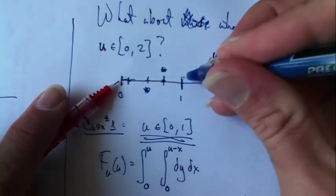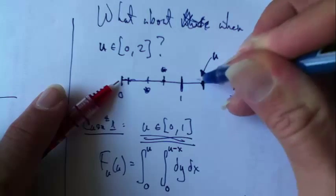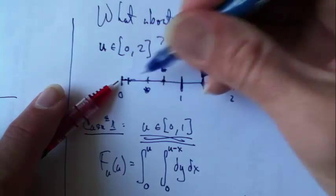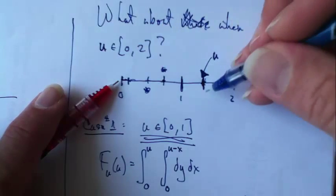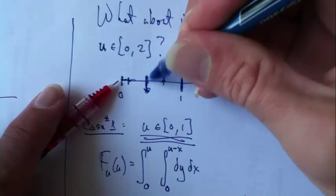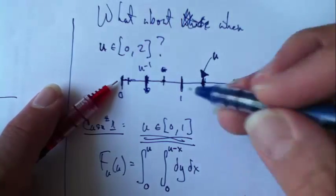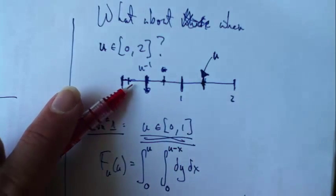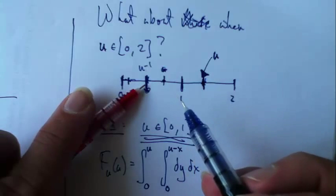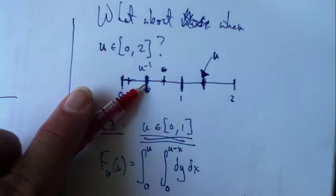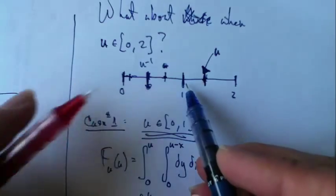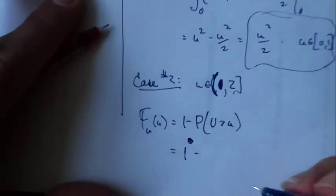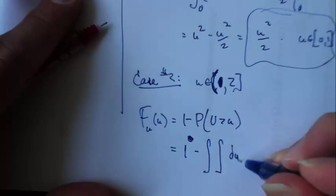This is u minus 1. If x is less than u minus 1, then y has to cover a larger distance than 1. So our x variable will need to start at at least u minus 1 and it tops out at 1. I need the 1 minus down here. I'm going to do the dy first and then the dx. The x goes from u minus 1 up to 1.